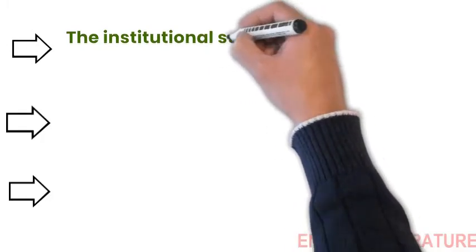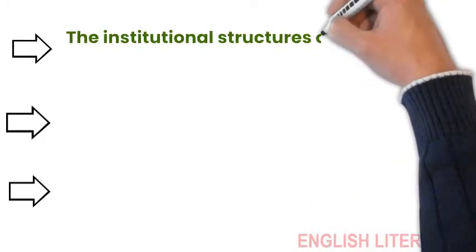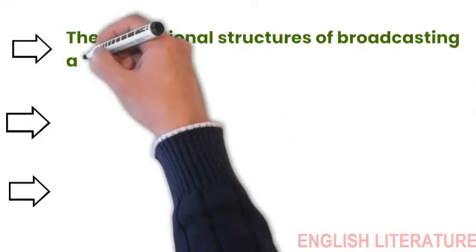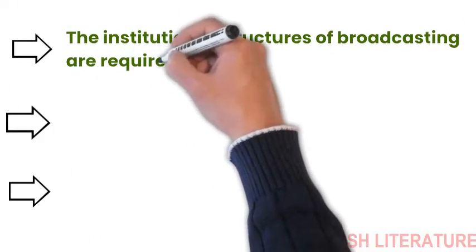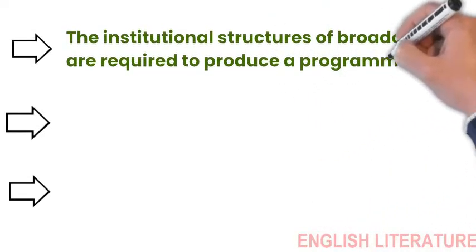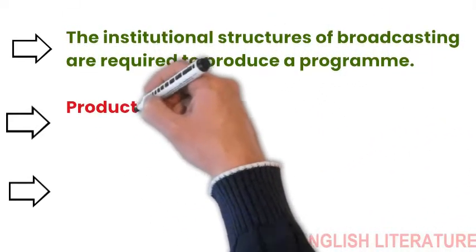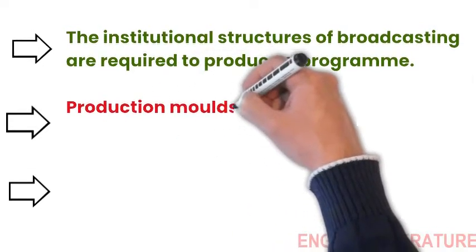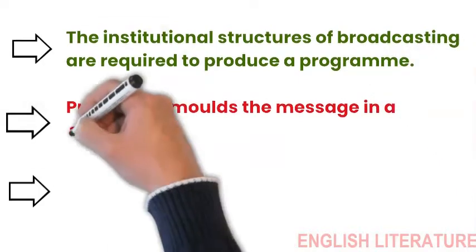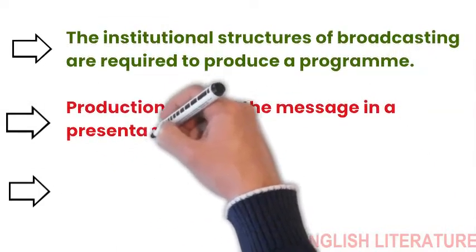First, the institutional structures of broadcasting, with their practices and networks of production, their organized relations and technical infrastructures are required to produce a program. Production here constructs the message. Thus, the circuit begins here.